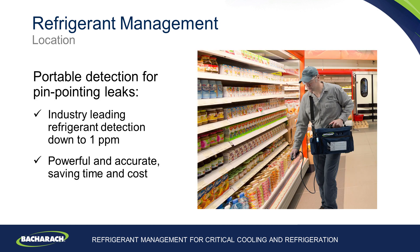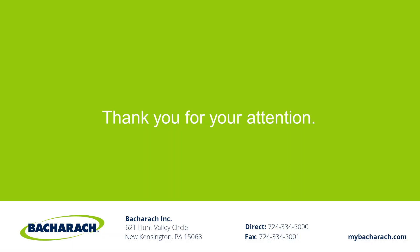To complement the range of fixed leak detection systems, BACARAC also have a vast range of portable leak detection devices. Industry-leading refrigerant leak detection down to 1 PPM offers a powerful and accurate tool to detect leaking refrigerant. The portable gas detector is the perfect tool for any service engineer, being able to leak inspect an entire system easily, quickly, and effectively. Thank you for your attention today. We hope you found this webinar enlightening on refrigerant usage and leak detection patterns. For more information, please follow the links below.